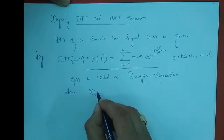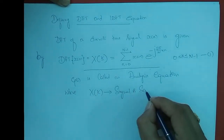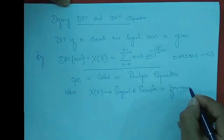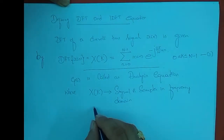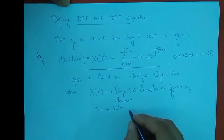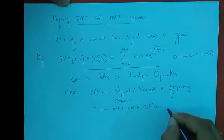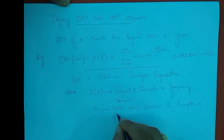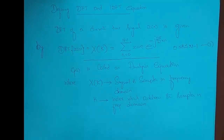What is X of k? X of k is the signal, or rather the samples in the frequency domain. K is the index in X of k — it is the index which addresses the samples in the frequency domain.